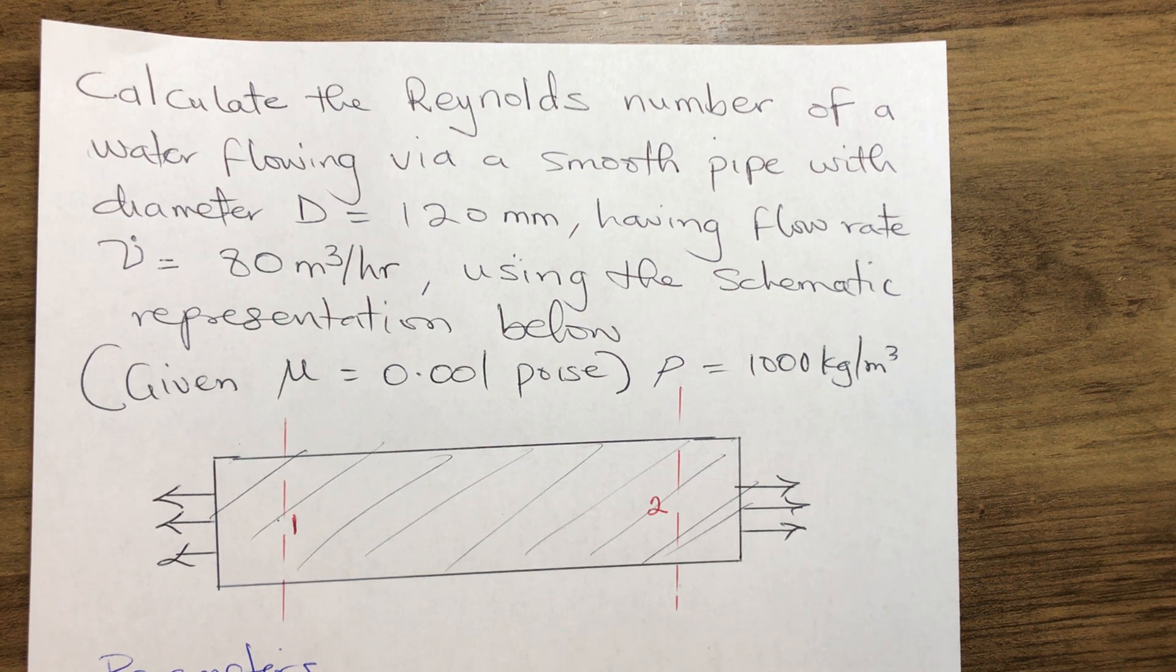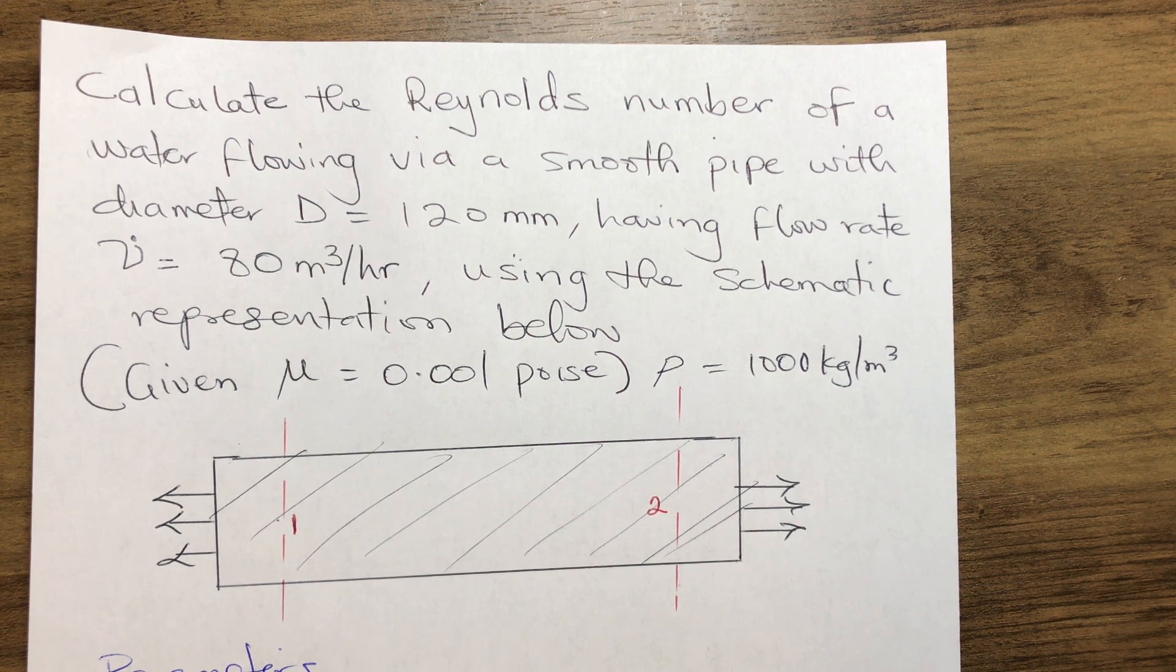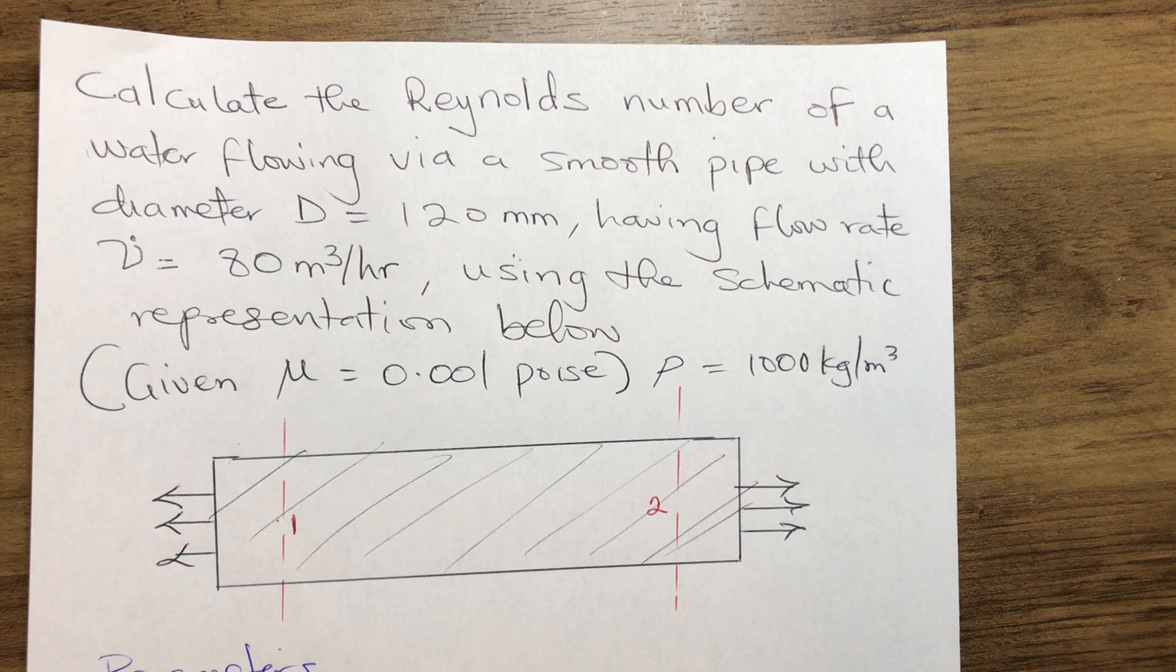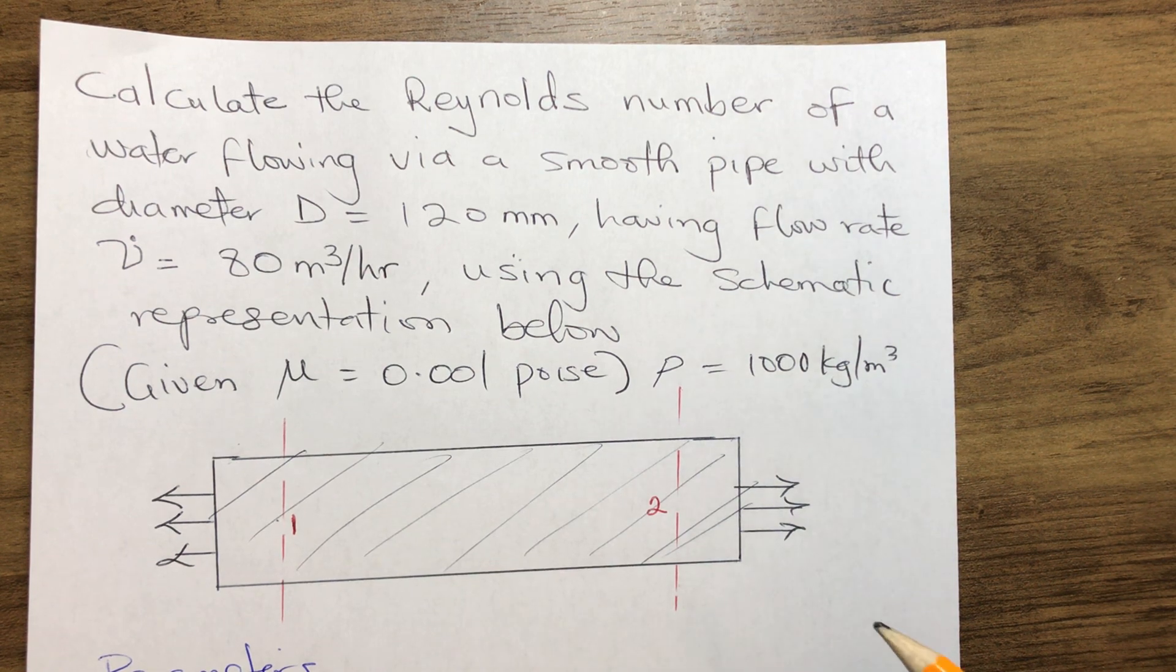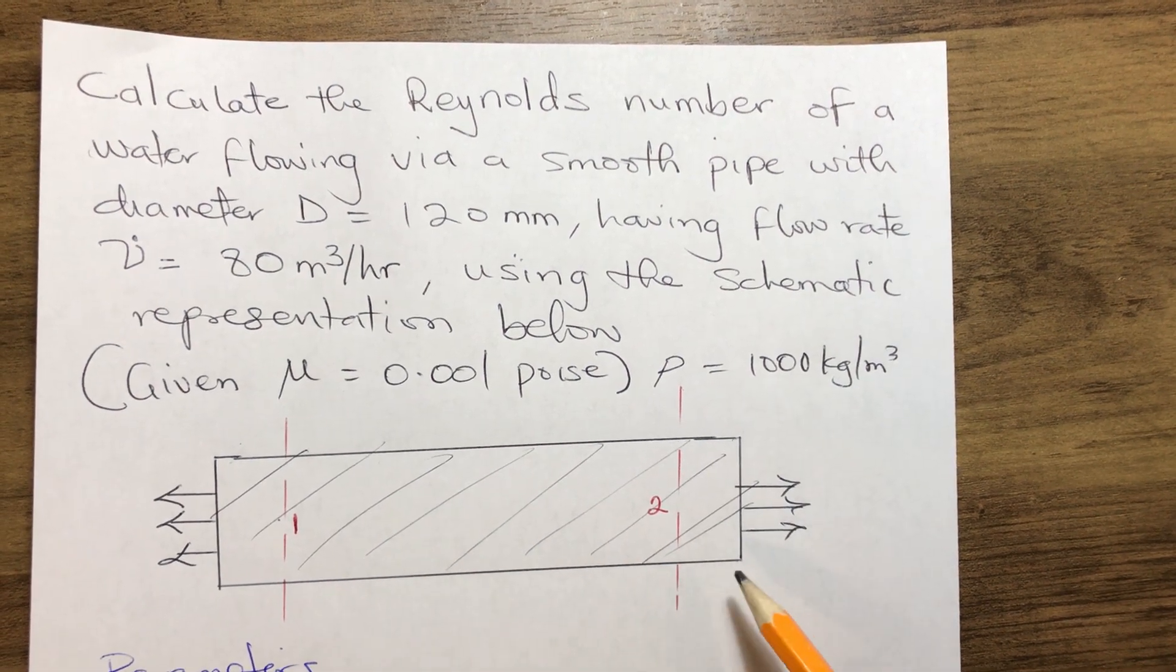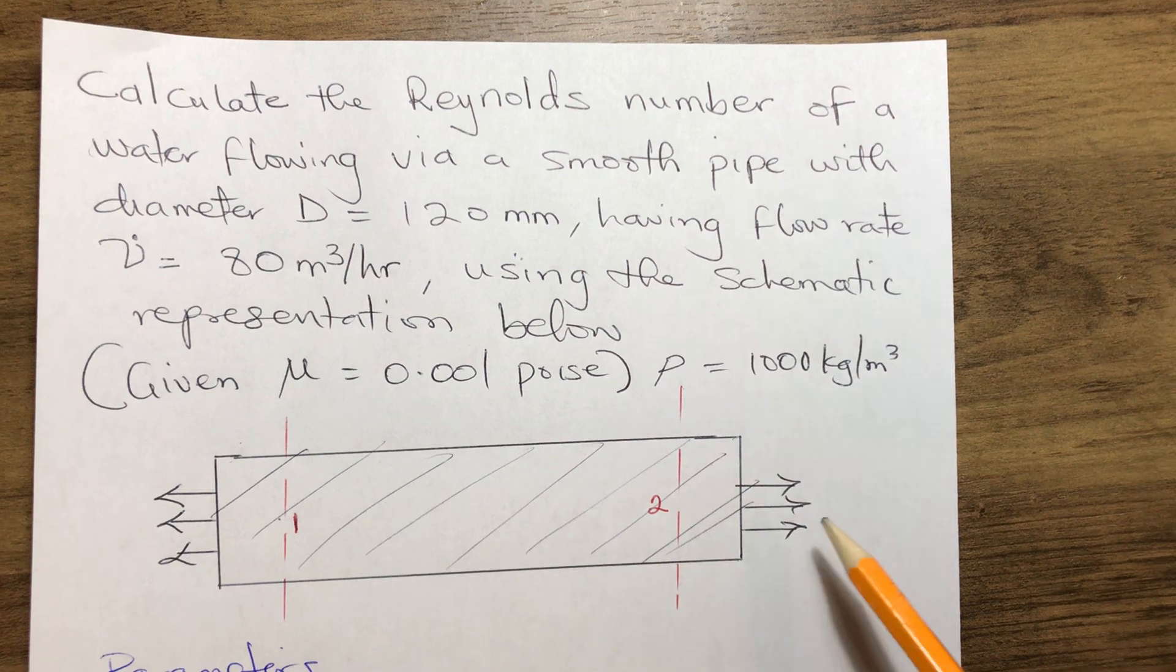Using the schematic diagram, we have the water flowing through a smooth pipe from the entry to the outlet.